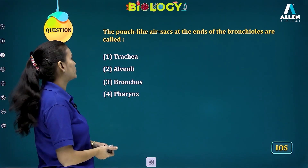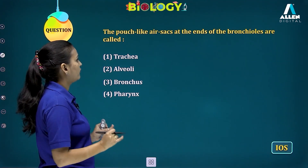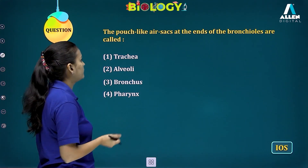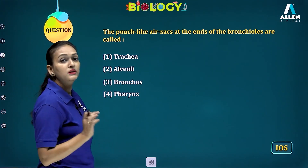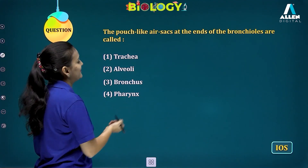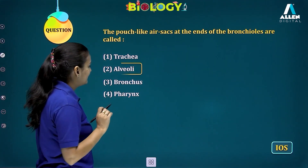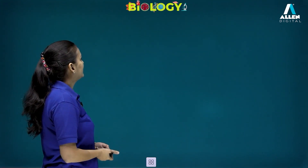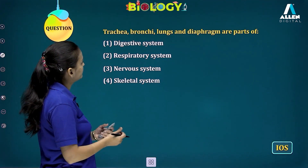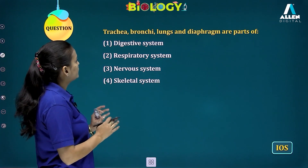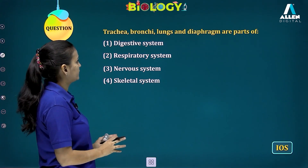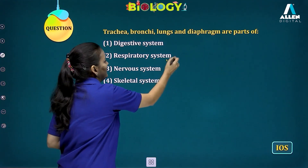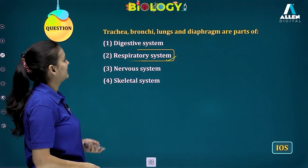Another IOS question: pouch-like air sacs at the end of bronchioles — what are they called? The answer is alveoli. Bronchus and pharynx cannot be the answer. Next IOS question: trachea, bronchi, lungs, and diaphragm are part of which system? They are part of the respiratory system — not the digestive, nervous, or skeletal system.